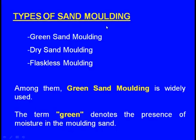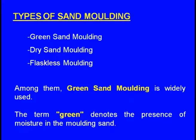Now we will see the conventional sand moulding process. The basic types of sand moulding are green sand moulding, dry sand moulding, and flaskless moulding. Among them, green sand moulding is widely used. Green sand moulding means when moisture is present in the sand, that sand is known as green sand. When a mould is made with this moist sand and molten metal is poured, it is known as green sand moulding.